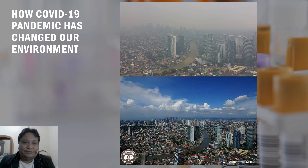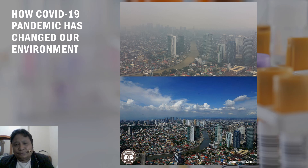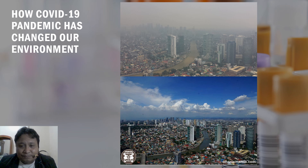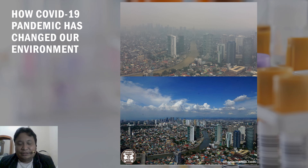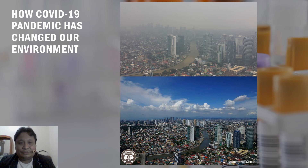How has the COVID-19 pandemic changed our environment? The upper picture shows Metro Manila with the Pasig River under heavy smog caused by carbon dioxide emissions from vehicles. The lower picture was taken during the COVID-19 pandemic — due to lockdown and transportation being halted, you can see how dramatically the environment changed.